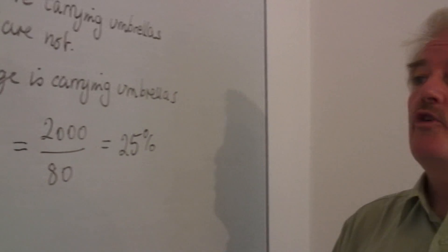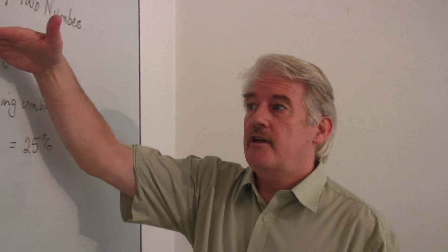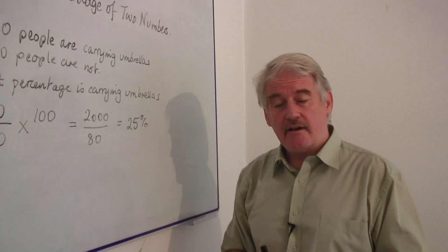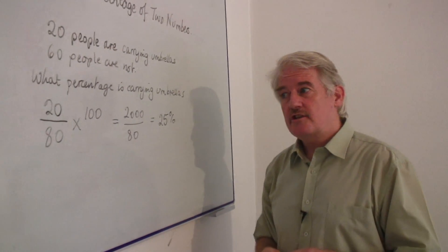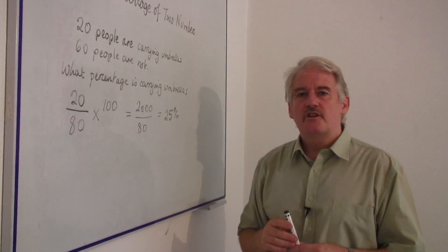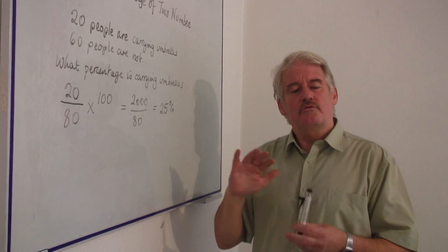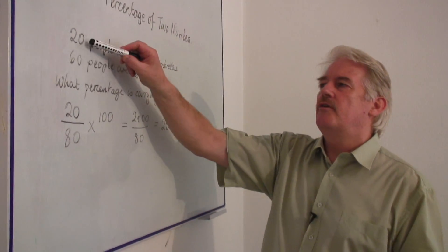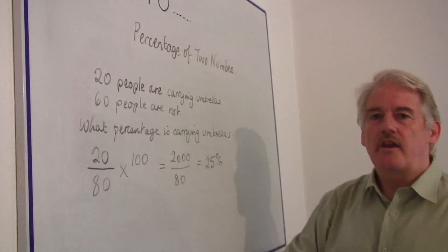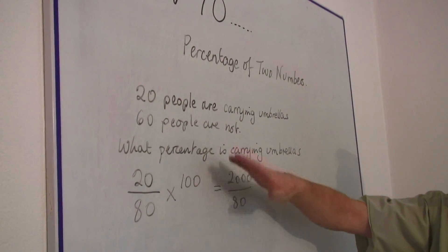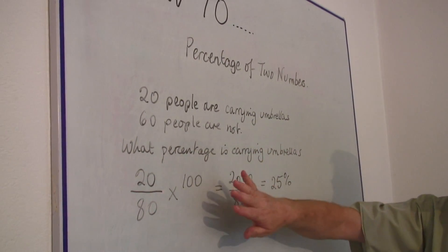If we were talking about the people who carry umbrellas compared with the people who are not carrying umbrellas, we would not use the word percentage. We would use a ratio. We would say there is a ratio of three to one. We should distinguish between using ratios and using percentages.